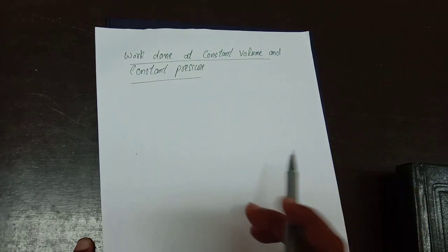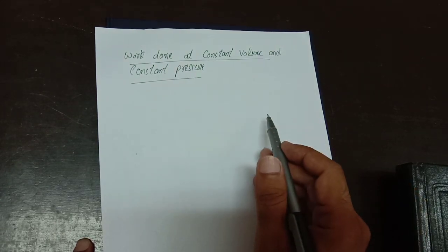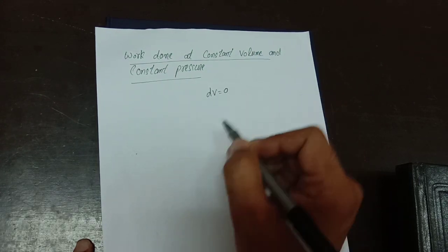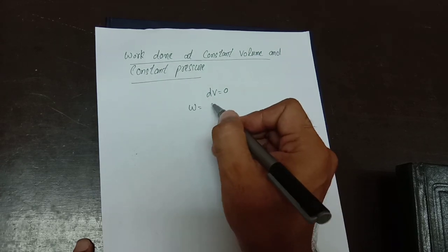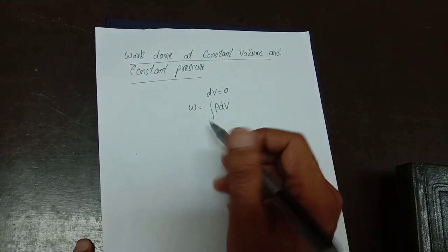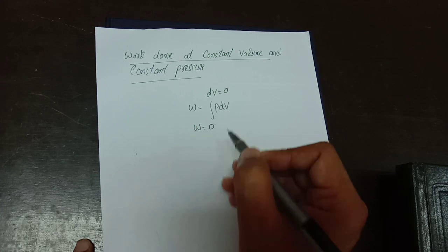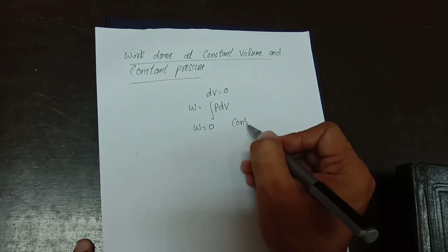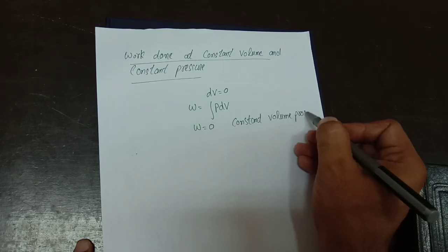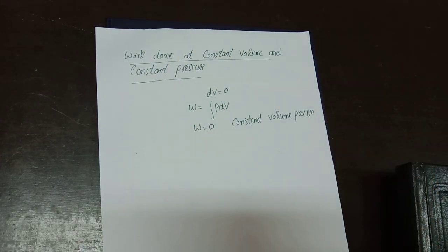When volume is kept constant there is no change in volume, so dV = 0. Since work done equals ∫P dV, when volume is not changing the work done is zero in a constant volume process — the gas is neither expanding nor compressing.